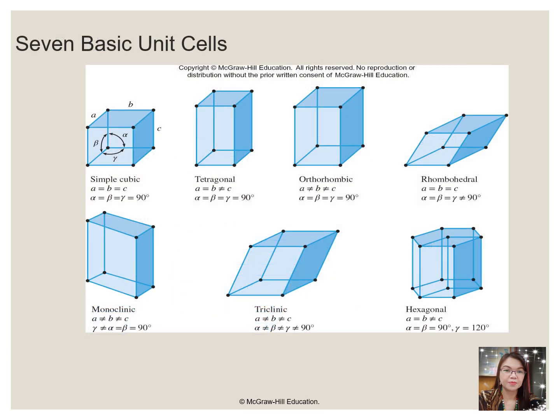There are seven fundamentally different kinds of unit cells which differ in relative lengths of the edges and the angles between them. As shown in the figure, we have simple cubic, tetragonal, orthorhombic, rhombohedral, monoclinic, triclinic, and hexagonal. Each unit has six sides, and each side is a parallelogram. We focus primarily on the cubic unit cells, in which all sides have the same length and all angles are 90 degrees. But the concepts we introduce also apply to substances whose unit cells are not cubic.